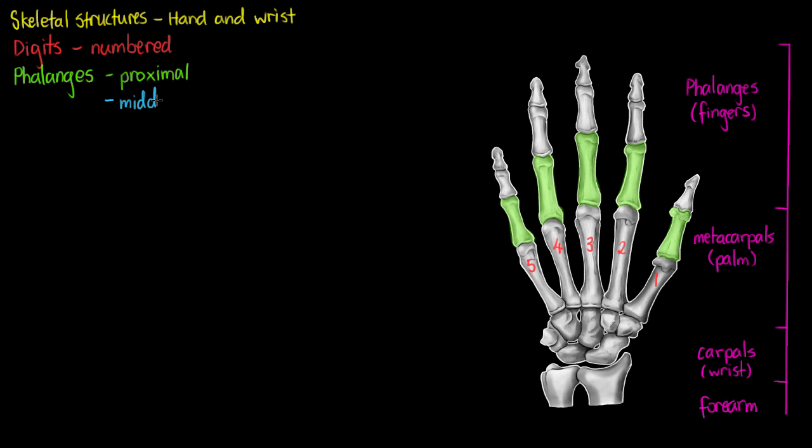The next will be the middle or intermediate bones, highlighting them here. If we notice, our thumb doesn't have an intermediate phalange.